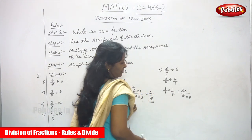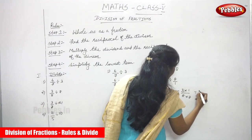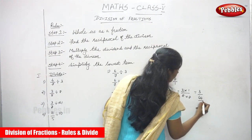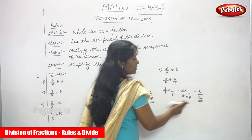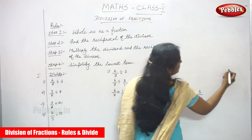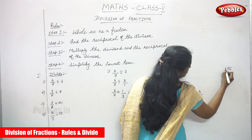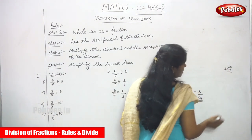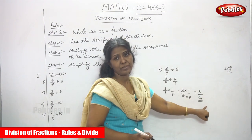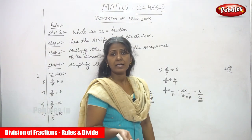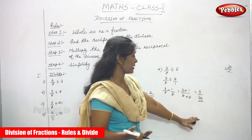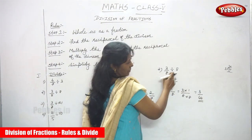Step 3: multiply the dividend and the reciprocal of the divisor — 3 × 1 over 8 × 8. That gives 3/64. Step 4: check for lowest term — 3 and 64 share no common divisor, so you cannot simplify further. The answer is 3/64.